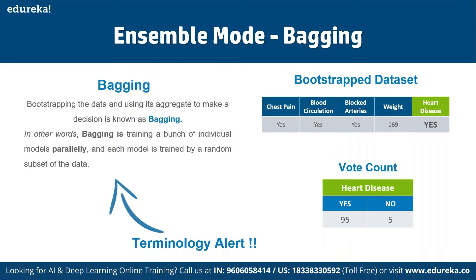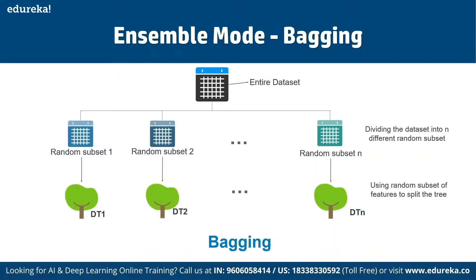This leads us to bootstrapping. Bootstrapping is an estimation method used to make predictions on a data set by resampling it. To create a bootstrap data set, we randomly select samples from the original data set. Note that we can select the same sample more than once. For example, a bootstrap data set might include: chest pain — yes, blood circulation — yes, blocked arteries — yes, weight 169 — not sure, with an overall count of yes being 95 and no being 5.